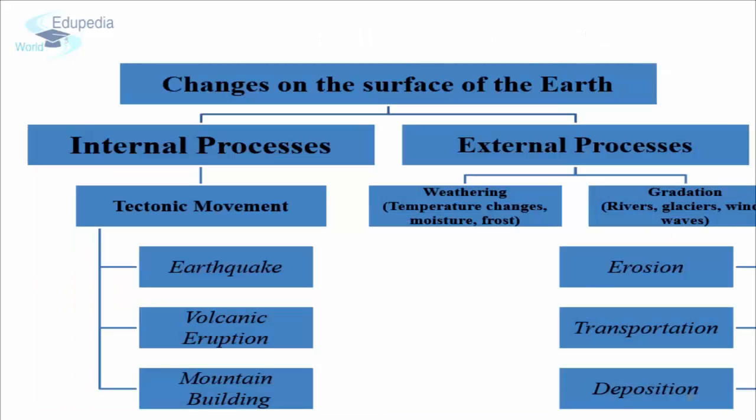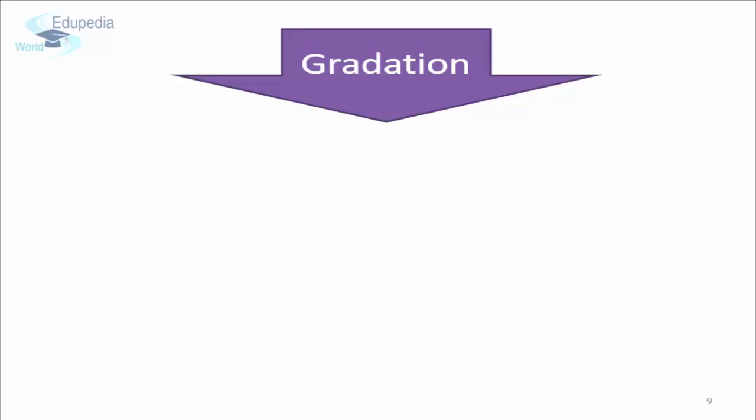Here is a flowchart showing the internal and external processes. Tectonic movements and eruption of magma are the two main processes that lead to changes from within the earth surface, whereas weathering and gradation can be termed as the two sub-processes that work from outside the earth surface and result in the leveling of land.